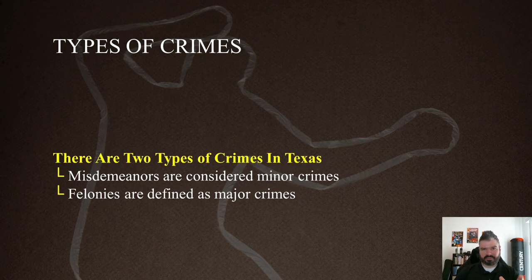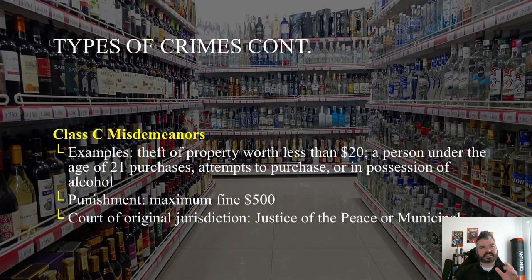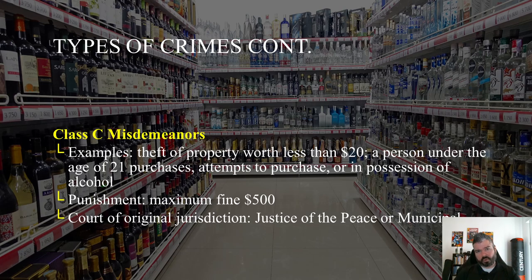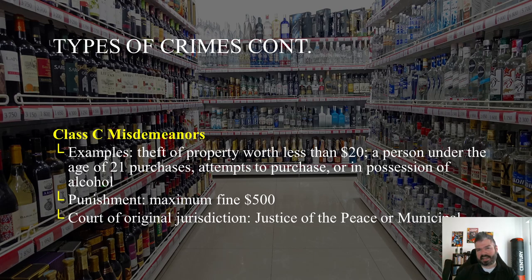With misdemeanors, let's start with Class C. Class C misdemeanors include theft of property worth less than $20, a person under the age of 21 purchasing, attempting to purchase, or in possession of alcohol, and speeding tickets. The maximum fine is $500. The court of original jurisdiction — the court that has the right to first hear the case — is the Justice of the Peace or a municipal court, with some overlapping jurisdiction between the two.